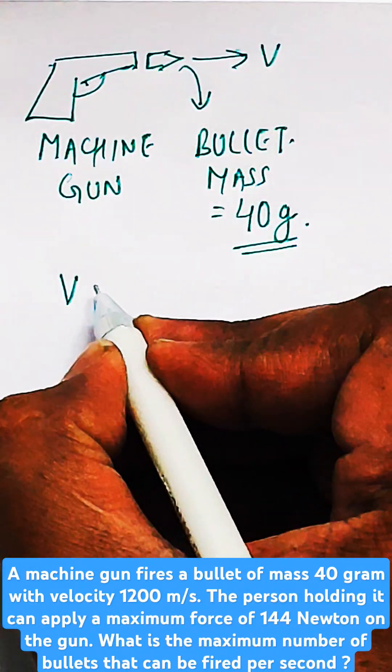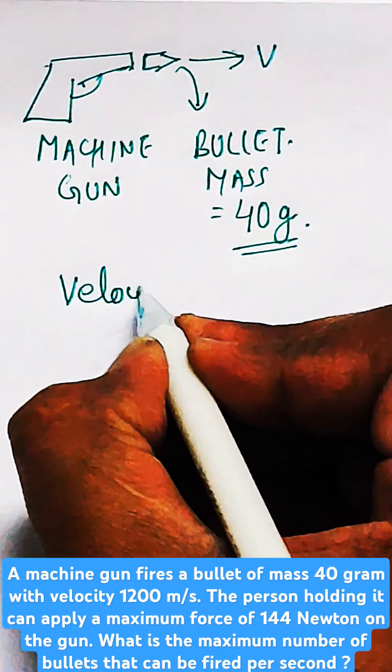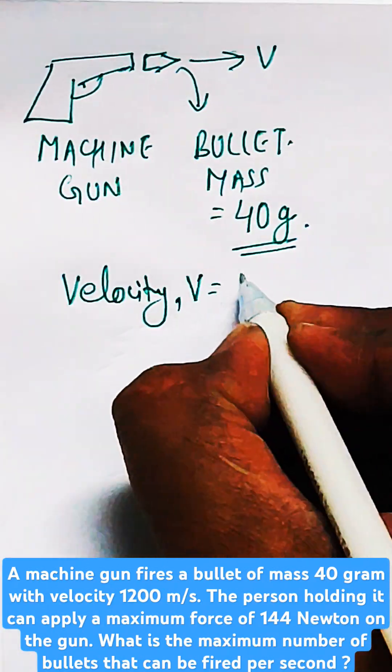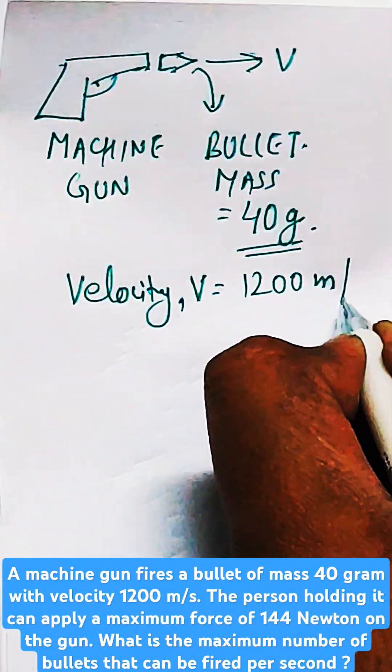So let's say the velocity of the bullet as given to you is V equals 1200 meters per second, and mass of the bullet is 40 grams.